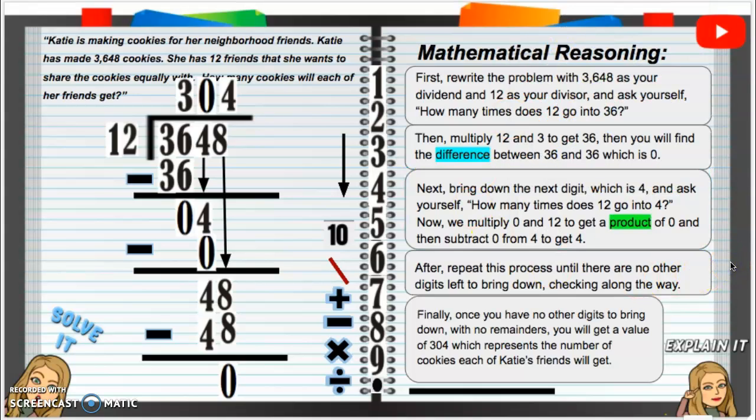After, repeat this process until there are no other digits left to bring down, checking along the way. Finally, once you have no other digits to bring down with no remainders, you will get a value of 304, which represents the number of cookies each of Katie's friends will get. So, I know that word value is also a vocab word. So, that is going to be it for the writing. Great job!